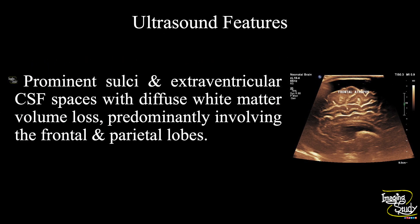In summary, prominent sulci and extraventricular CSF spaces are seen with diffuse white matter volume loss, predominantly involving the frontal and parietal lobes, indicating cerebral atrophy.